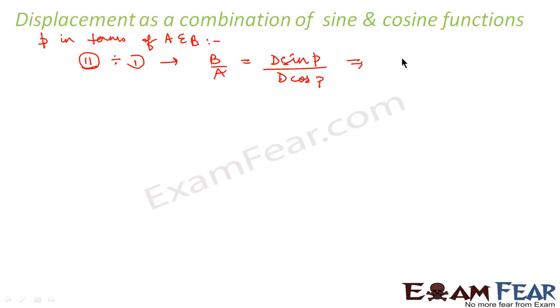So, this gives φ is, this will give tan φ is equal to B/A or φ is equal to tan⁻¹(B/A).